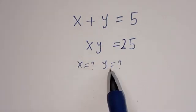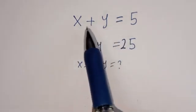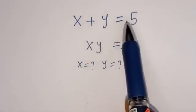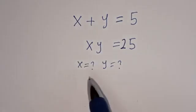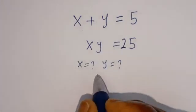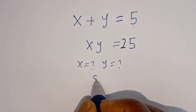Hello. How to solve for x and y in this equation: x plus y is equal to 5, and xy is equal to 25. Solution.